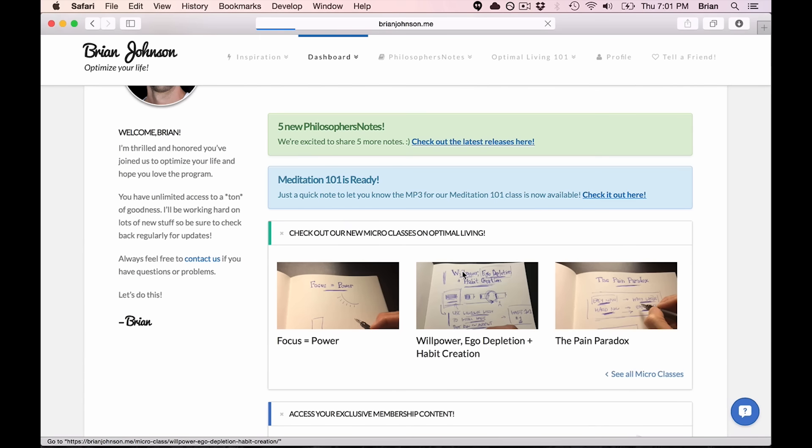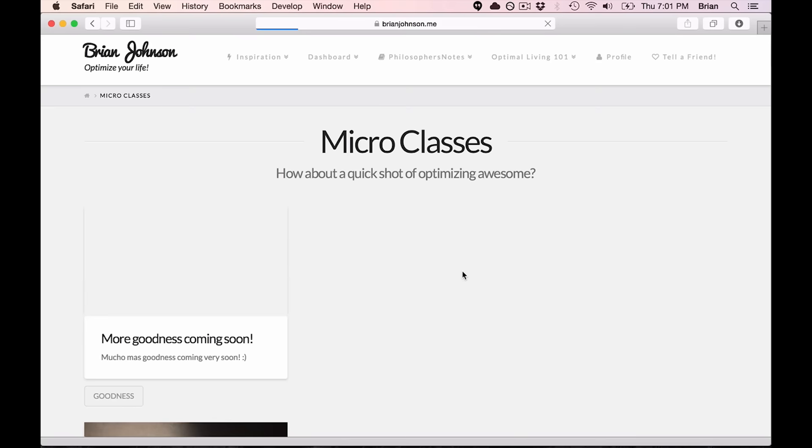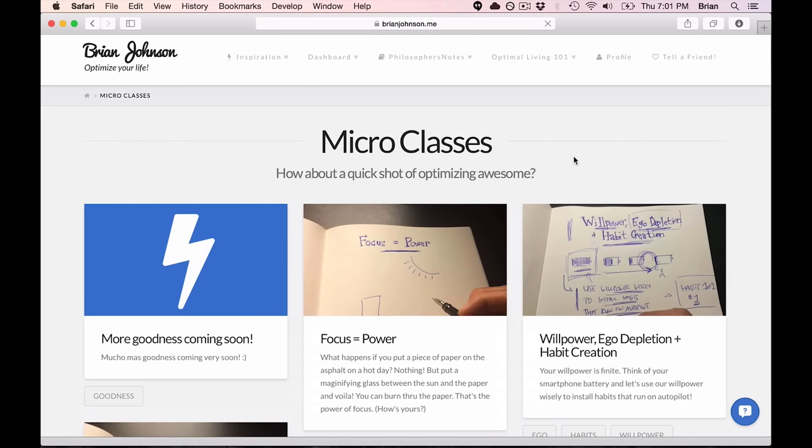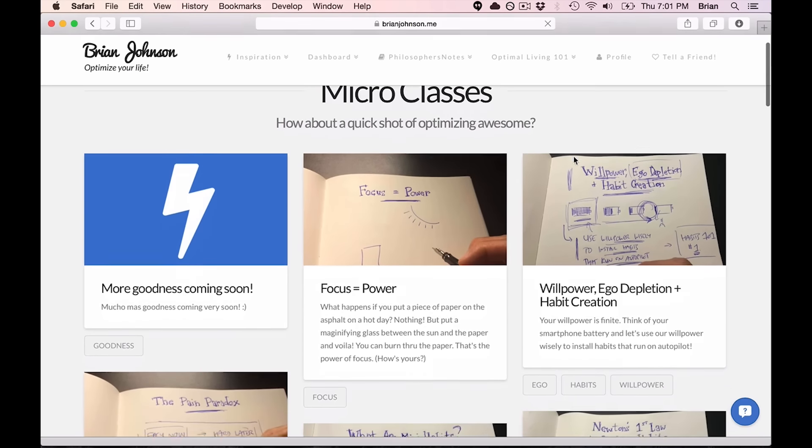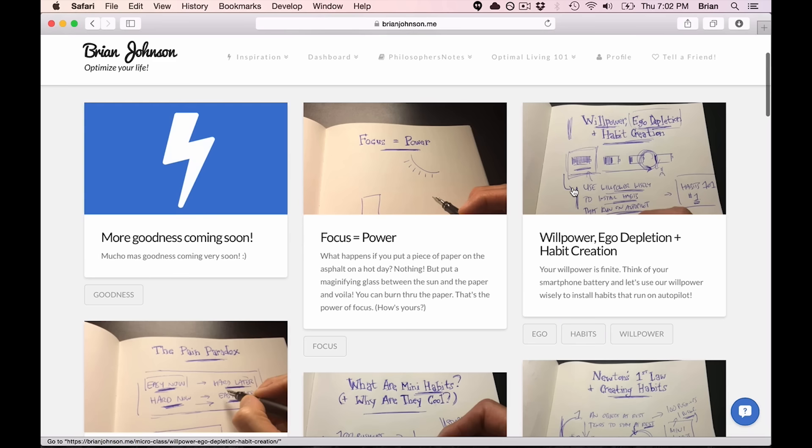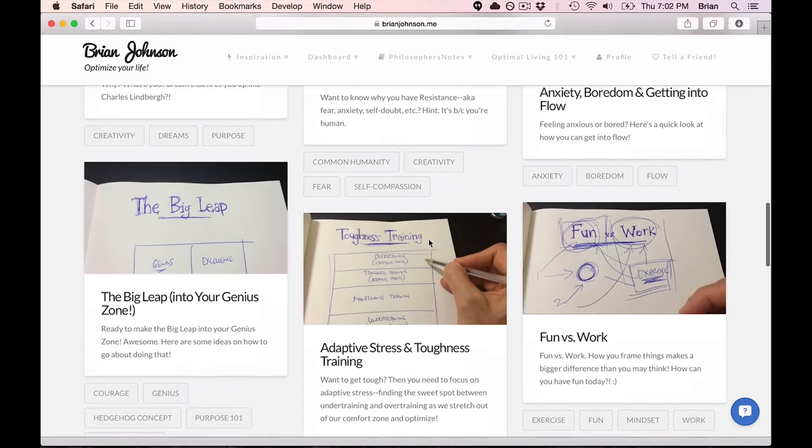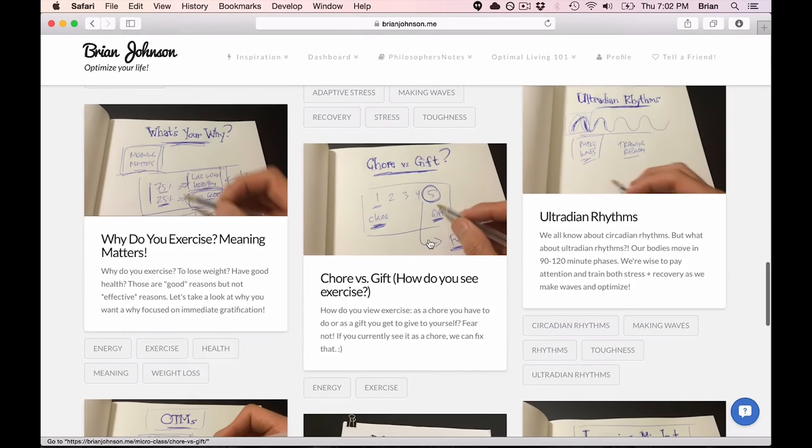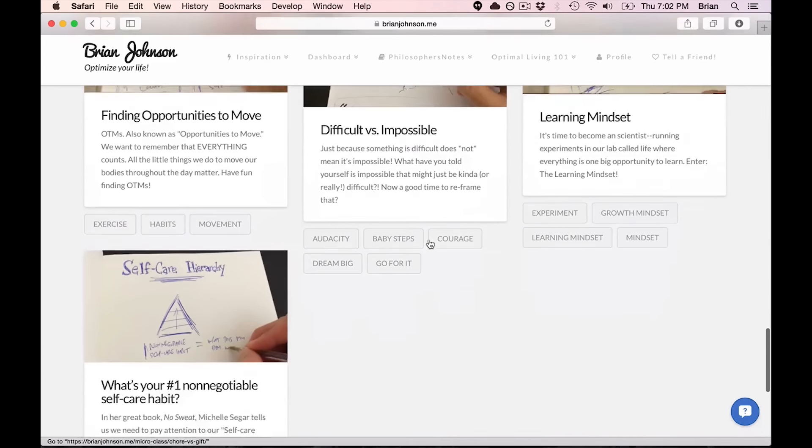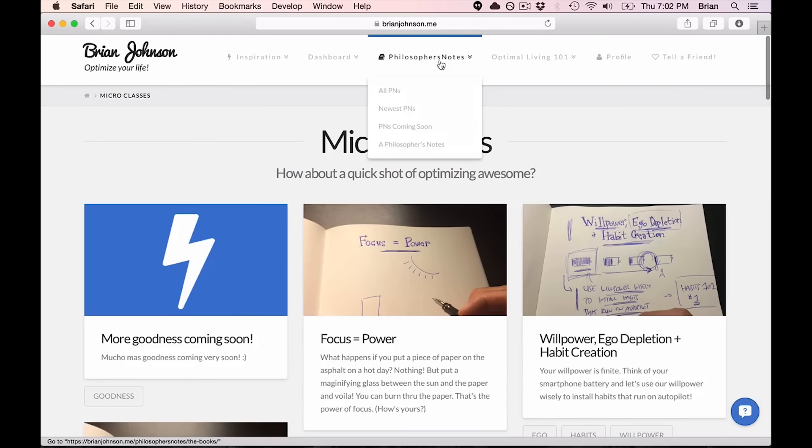I just started doing these micro classes, but I now share over 50 of these per month. We've shared dozens so far. And it's basically a quick class on my absolute favorite stuff across the different domains of optimal living. Two to three, maybe five minute little micro classes on how to optimize your life. In addition to that,